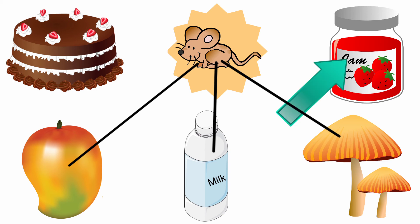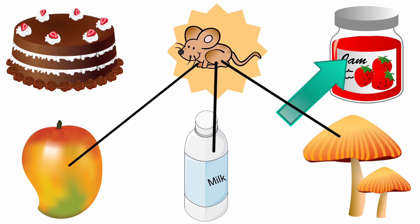Next one, jam. The beginning sound of the picture jam is J. And the sound of the letter M is M. The sound of the letter M and the beginning sound of the picture jam are different. So, we should not draw a line from mouse to jam. So, children, today we have done an activity. Thank you, children.